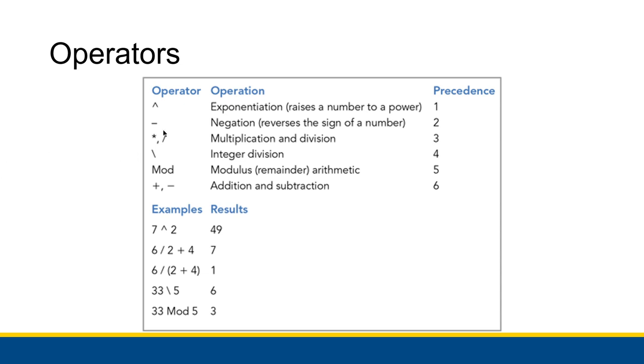We also have negation, which reverses the sign of a number. So if you put a negative sign in front of the number 23, you get negative 23. And if you put a negative sign in front of negative 23, you get positive 23.